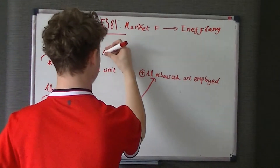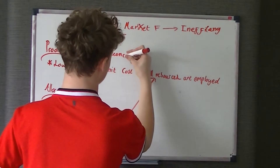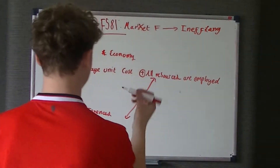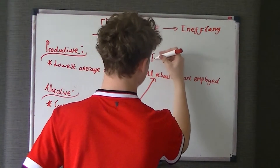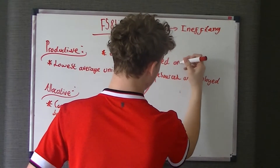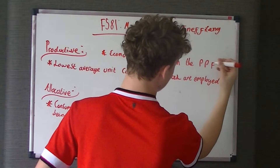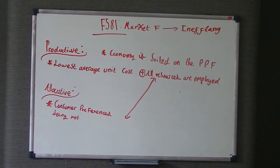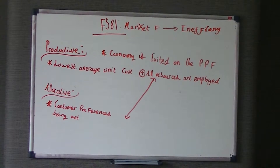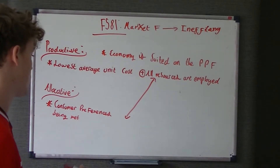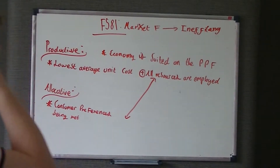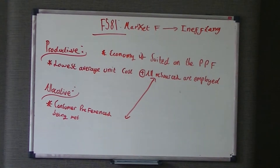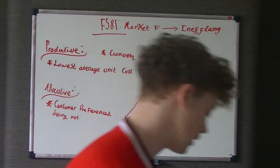You can also say that productive efficiency is when the economy is situated on the PPF — the Production Possibility Frontier. I'll explain that in a minute. Allocative efficiency is about the goods and services being produced in the economy meeting consumer preferences. That's the basic difference between allocative and productive efficiency.